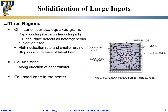The last section in the center is called the equiaxed zone. This zone is created by detached branches — dendrites that start to touch each other, break off, and form many seeds for solidification. These seeds then grow, but not strongly along any particular direction, so we form many small grains in this equiaxed zone.